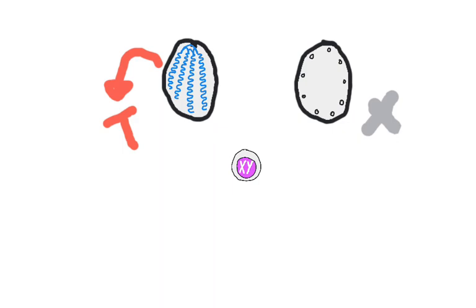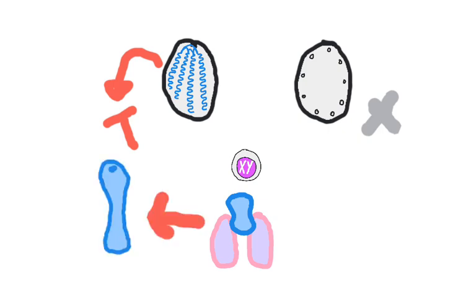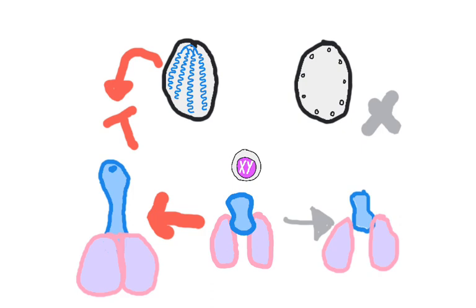It's the presence or absence of testosterone that'll drive the next step of development, which is development of the genitalia. Testosterone will lead the genital tubercle to grow in size resembling a penis, whereas the labial scrotal swellings will grow and fuse together, forming a scrotum. In the absence of testosterone, the genital tubercle will remain smaller and appear like a clitoris, whereas the labial scrotal swellings will remain a separate pair of labia. Estrogen would have no effects at this time.